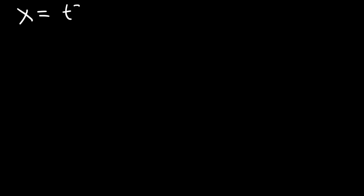In this video, we're going to talk about how to find the third derivative of a parametric function. So let's say that x is equal to t cubed minus 3, and y is equal to t to the fifth power minus t to the fourth power.